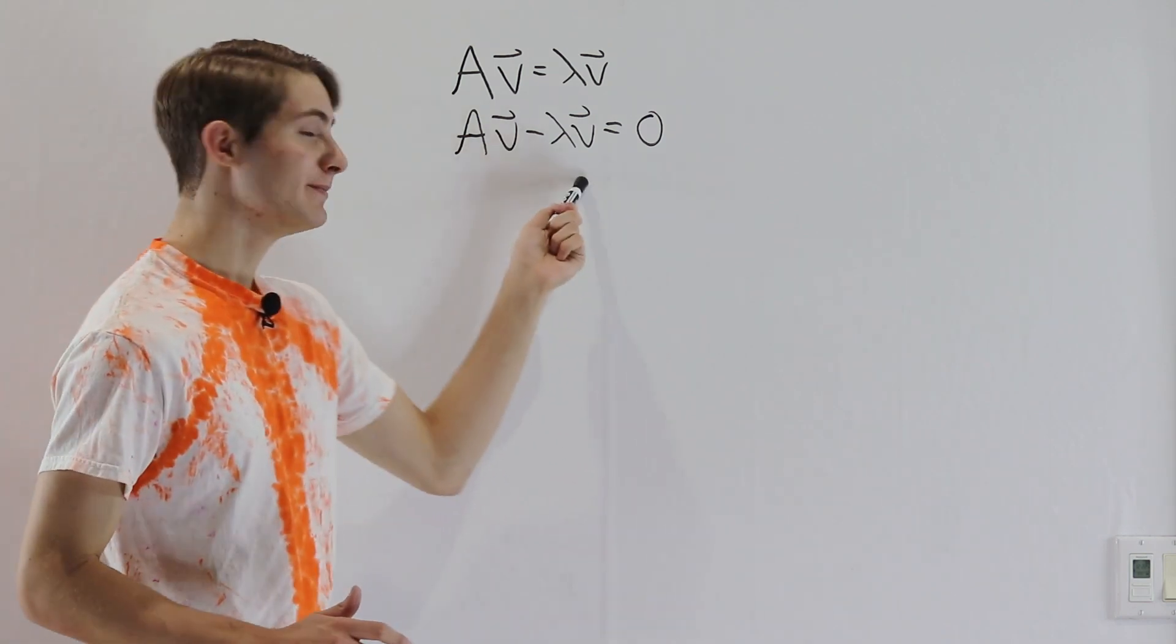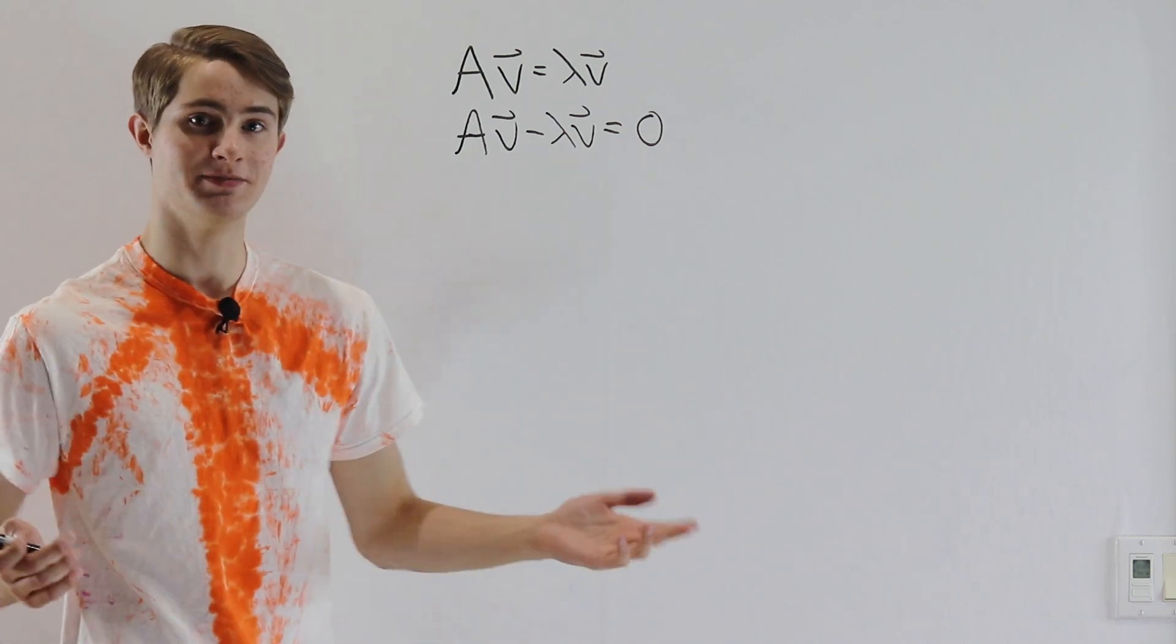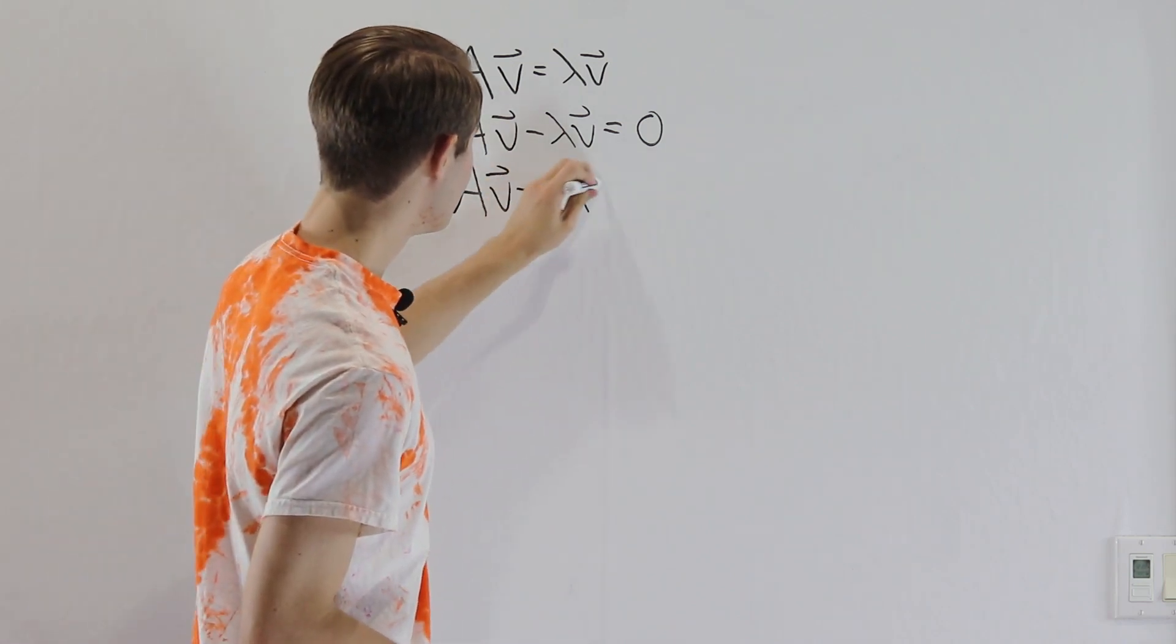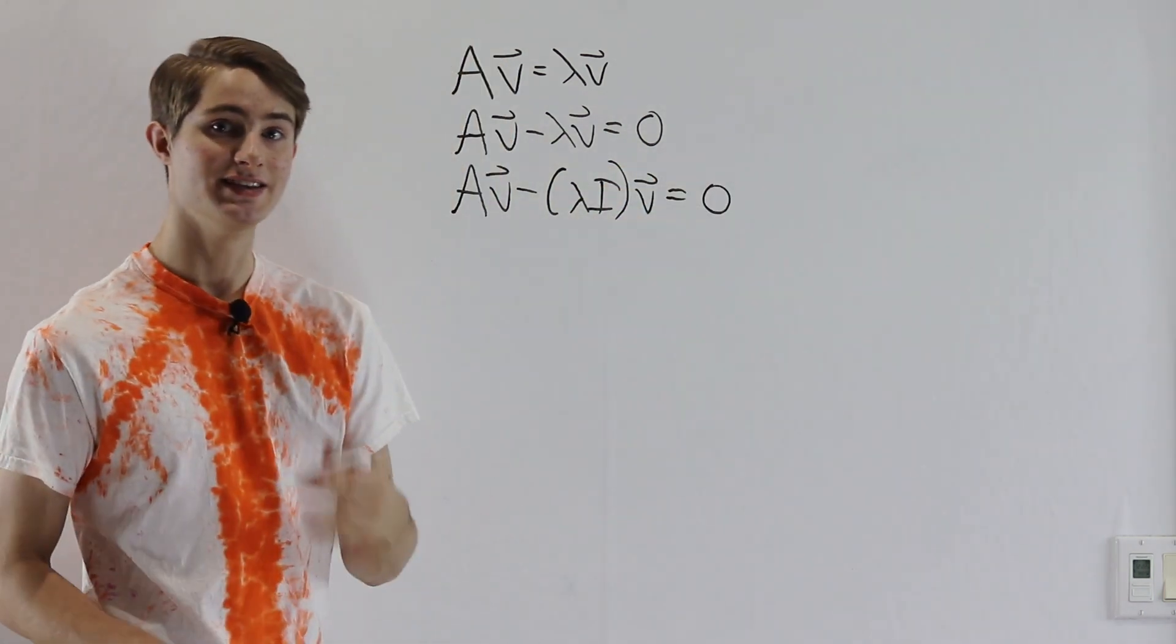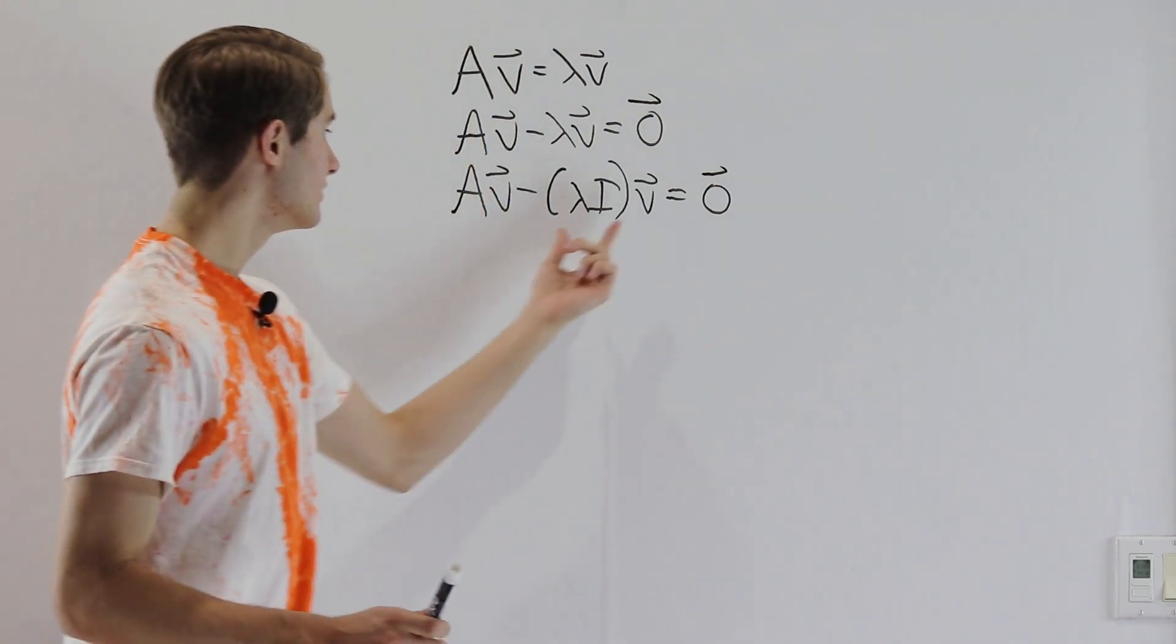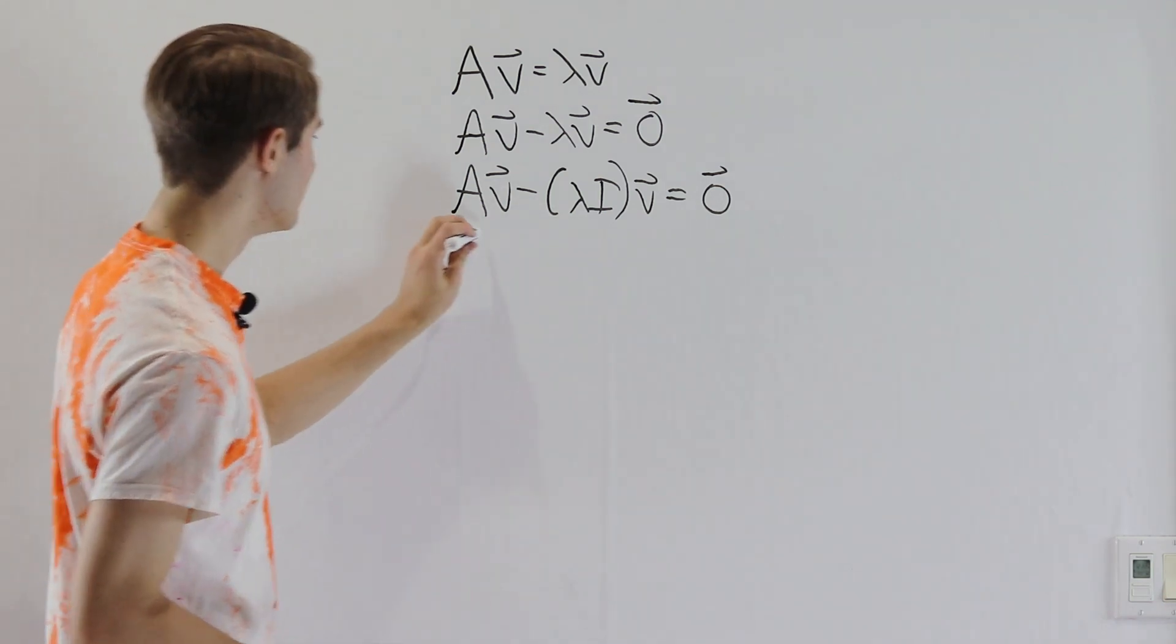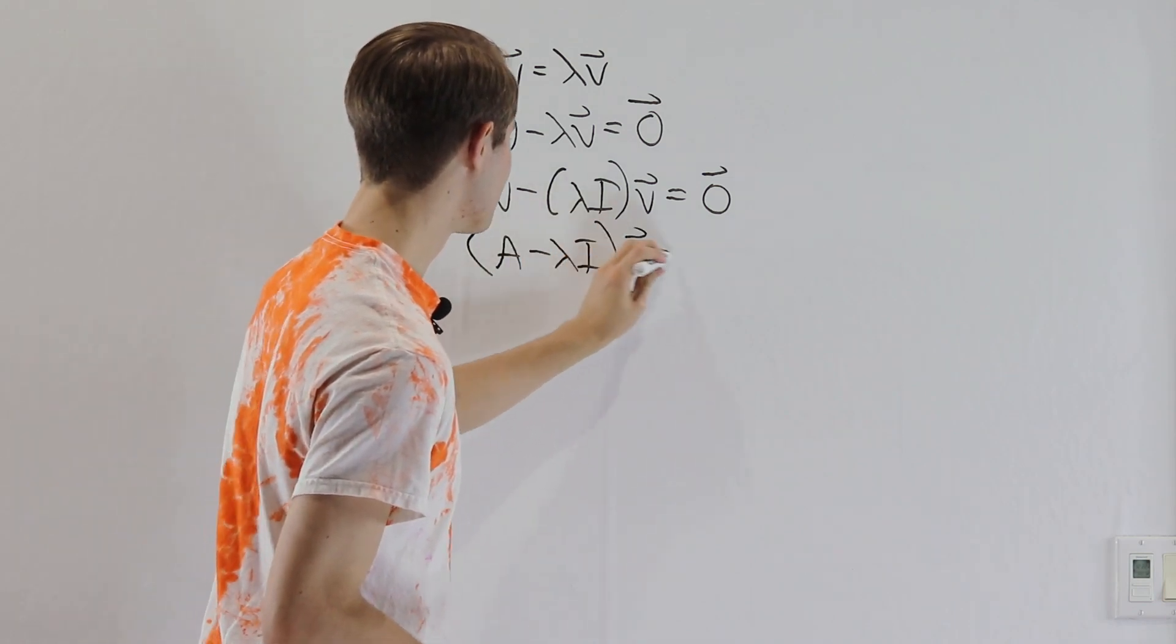But A is a matrix and lambda is just a number, so we can't just do a matrix minus a number. That doesn't make any sense. What we're going to do instead is rewrite lambda v as lambda I times v, where I is the identity matrix. And remember, the identity doesn't do anything, so this will have the exact same effect as lambda v. But now, because lambda I is a matrix, we're able to factor out v. So we get that A minus lambda I times v equals 0.